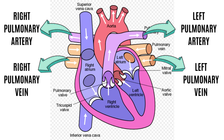Now we will look at pulmonary veins. Veins carry deoxygenated blood, but the pulmonary vein carries oxygenated blood from the lung back to the heart. Each lung has a superior and an inferior pulmonary vein, making a total of four. On the posterior surface, they enter the pericardium and drain into the superior left atrium.